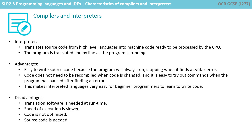With an interpreter, we translate the source code from high-level language into machine code ready to be processed by the CPU, just like with compiled code. But this time, the program is translated line by line as the program is running. The advantage is that it's easy to write the source code, because the program will always run, stopping when it finds the first syntax error.